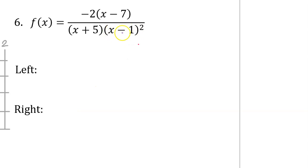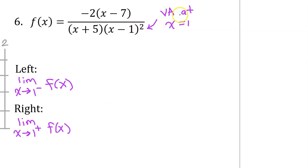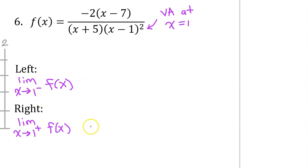So the limit as x approaches 1 from the left of f of x is negative infinity, and the limit as x approaches 1 from the right of f of x is positive infinity. The x minus 1 squared in the denominator does not cancel out with anything, so that means we have a vertical asymptote at x equals 1, which means both one-sided limits will be some kind of infinity.